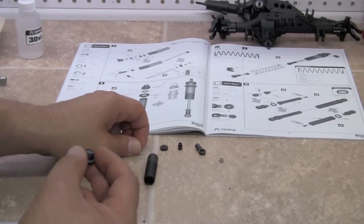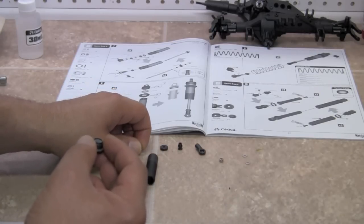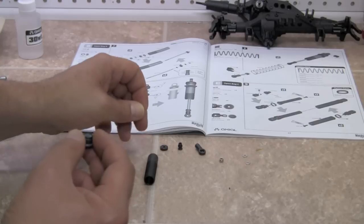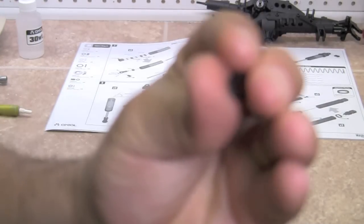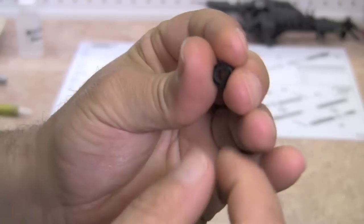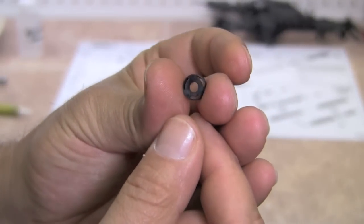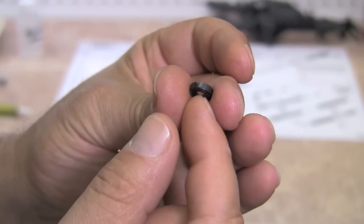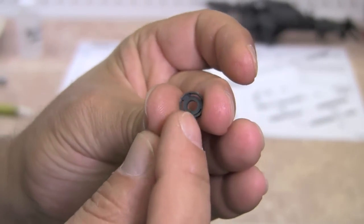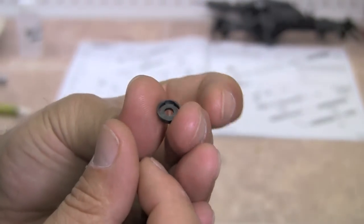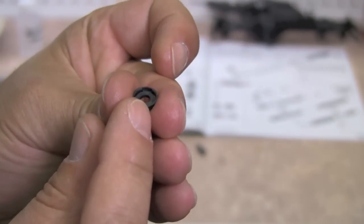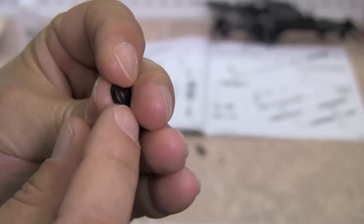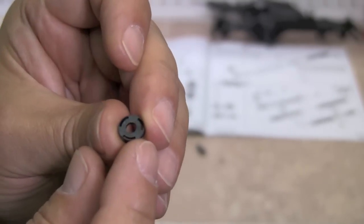At this point, we're going to take the top cap, which is AX80035-2. Now it's labeled dash-3 in the manual, but it is part dash-2, and you can see that it's cupped. This portion right here has an indentation, and this portion is flat.